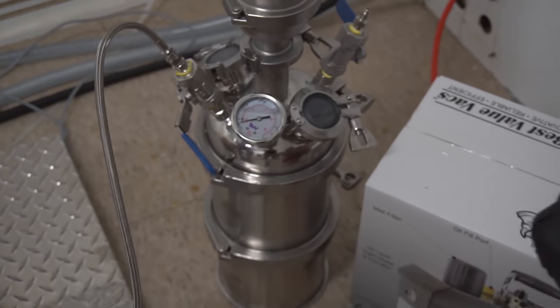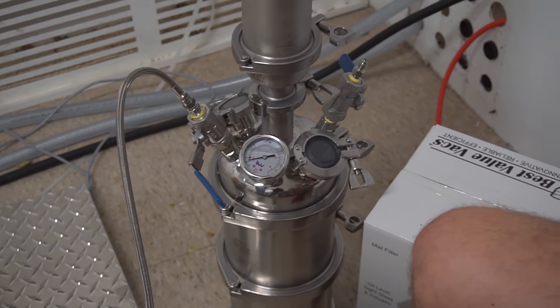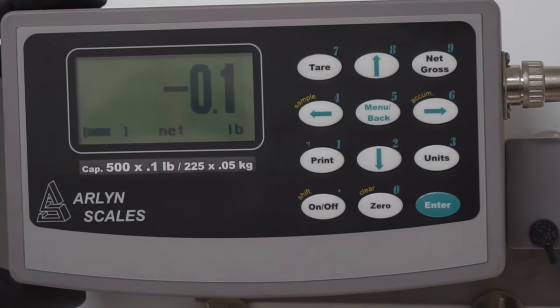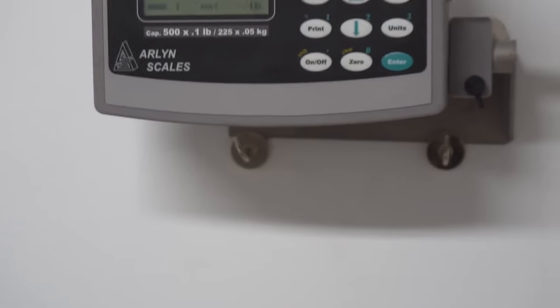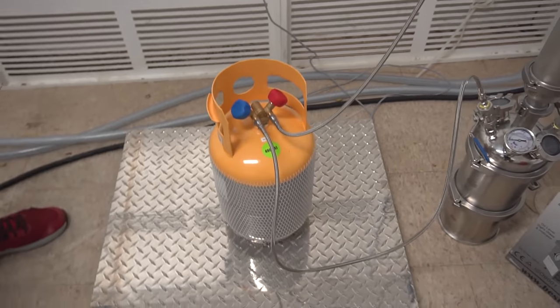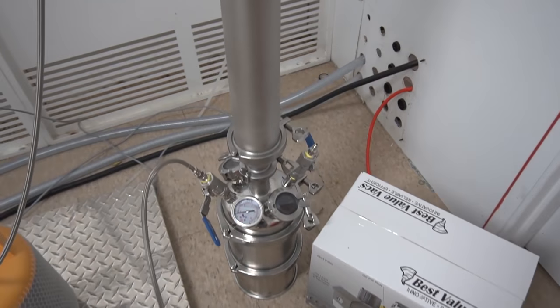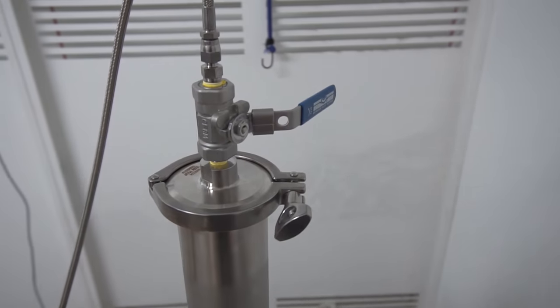So what I'm going to do first is I'm going to tear my scale. This is an intrinsically safe battery powered scale. I'm going to use it to weigh up my butane as it goes through the system. This system can hold about six pounds of butane, and we put about 1.1 pounds of material in the column. So that should be plenty to extract.